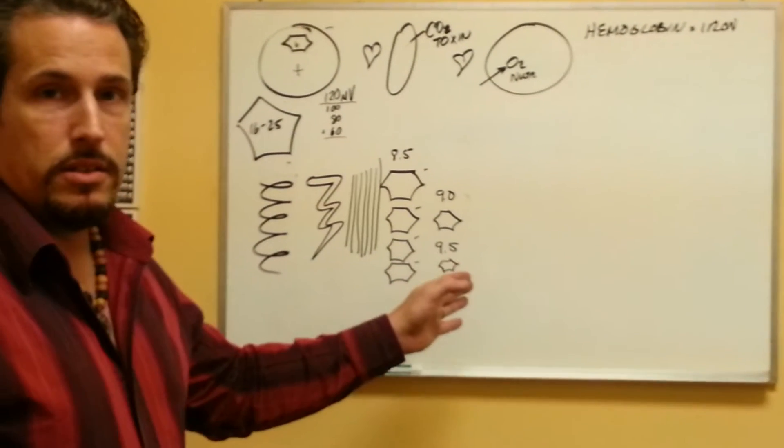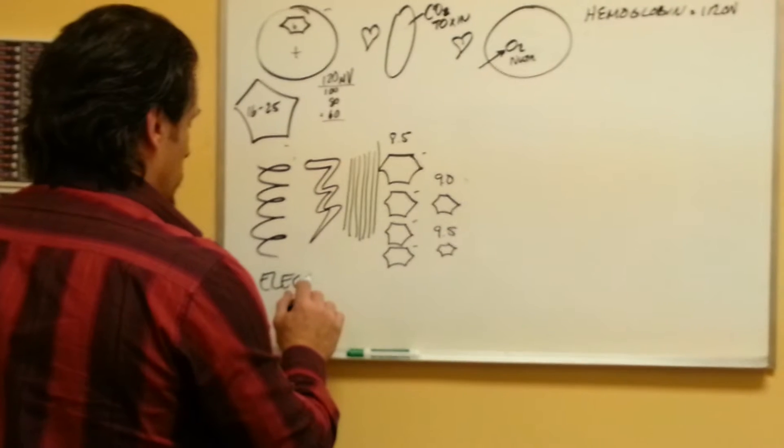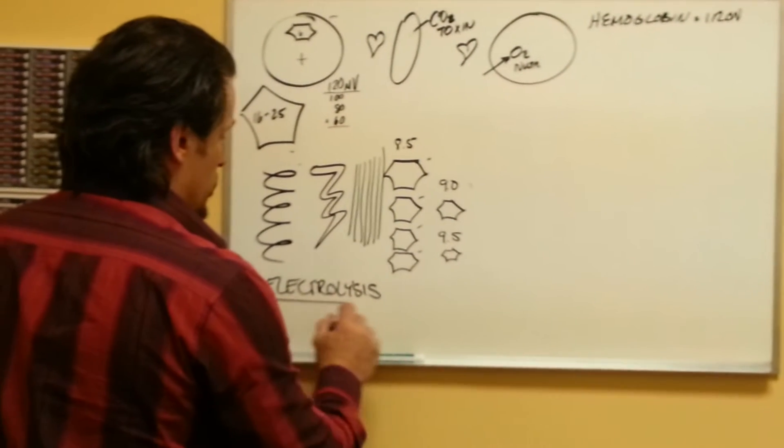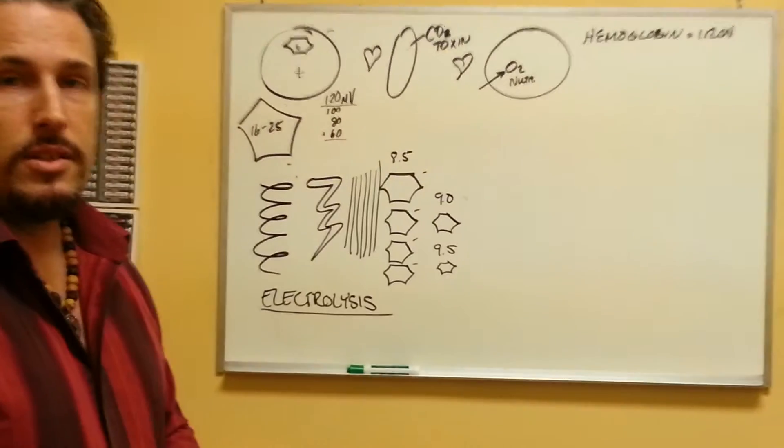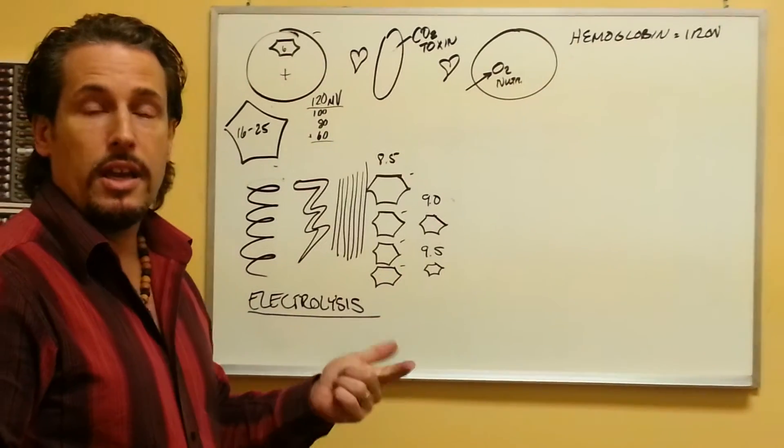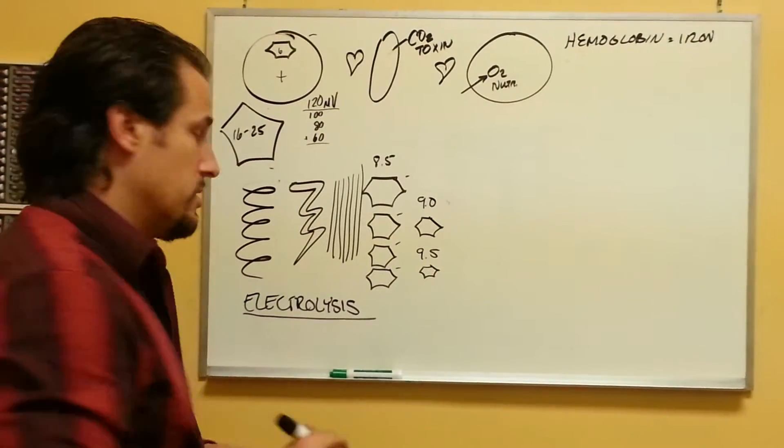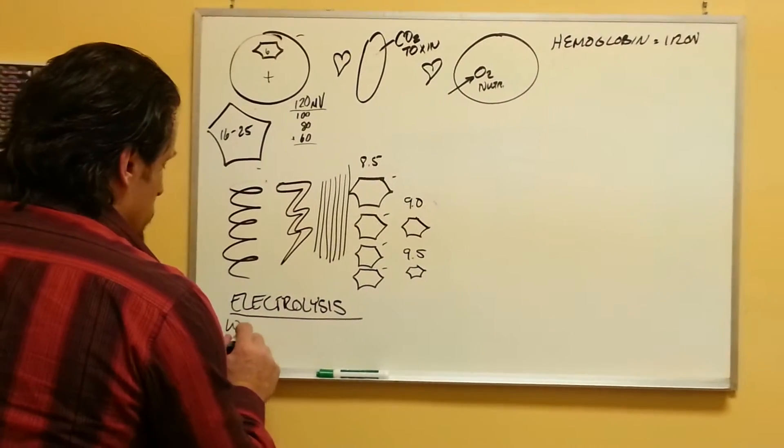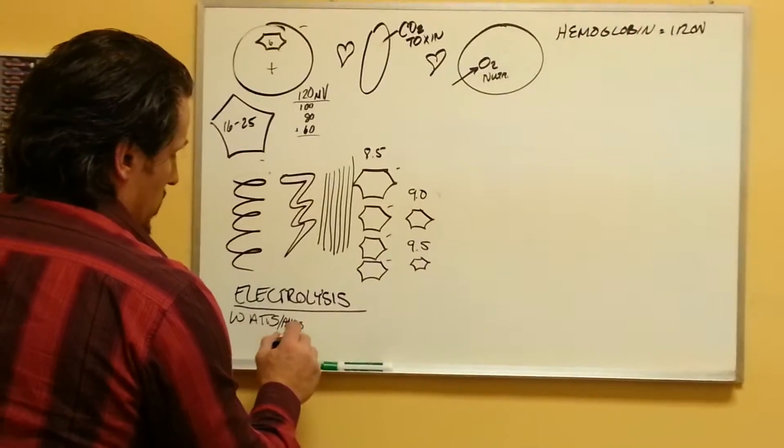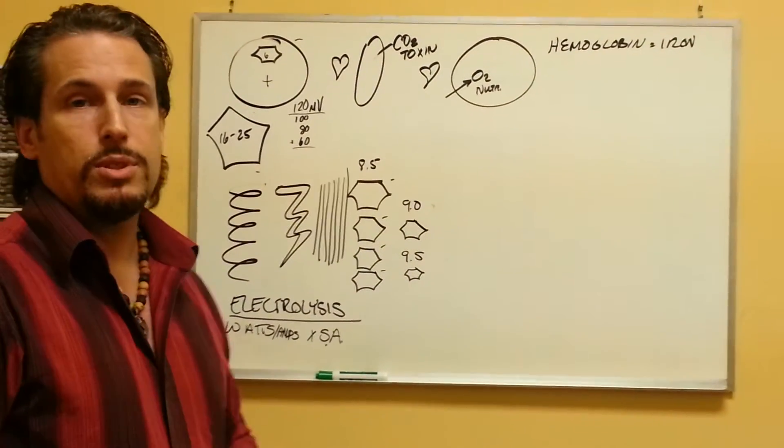This is all done through the process of electrolysis. All the drinking waters use pure electrolysis to fix that. That's done via the amount of wattage in the machine, amperage, and the amount of surface area that the water comes in contact with the plates. If electrolysis is a combination of watts or amps times surface area, that's going to be a key factor in choosing a machine.